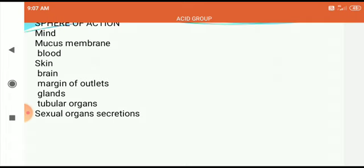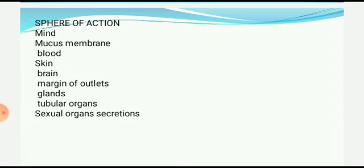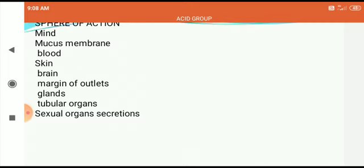All acids act on the mind, mucous membrane, blood, skin, brain, margins of outlet, glands, tubular organs, and sexual organs. We are talking right now about acids in general, not about any particular acid like nitric acid or picric acid. Whenever you are going to study about the acid group, you need to understand the basic pathogenesis of that particular group. This applies not only to acids but to any group — you need to understand the particular pathogenesis, the particular theme, and the thought process about that remedy.